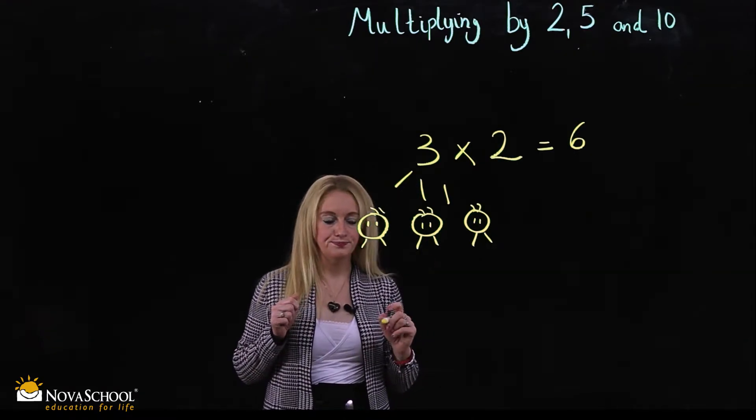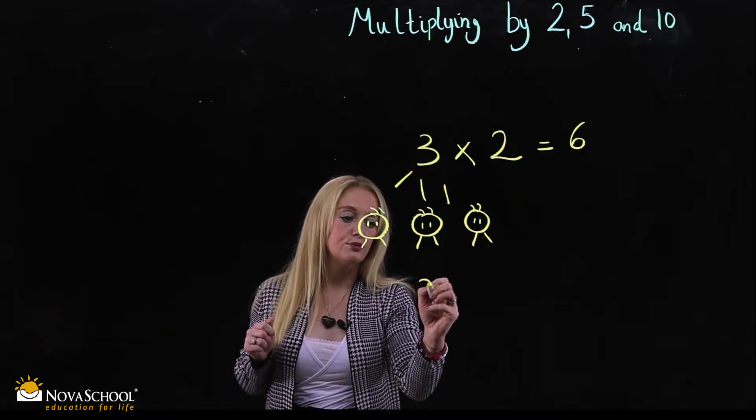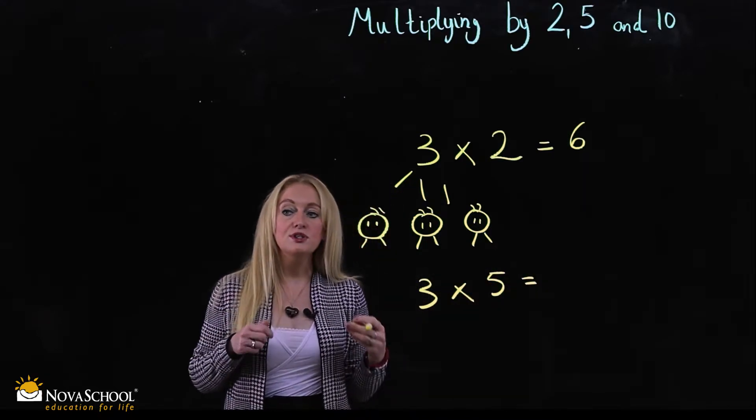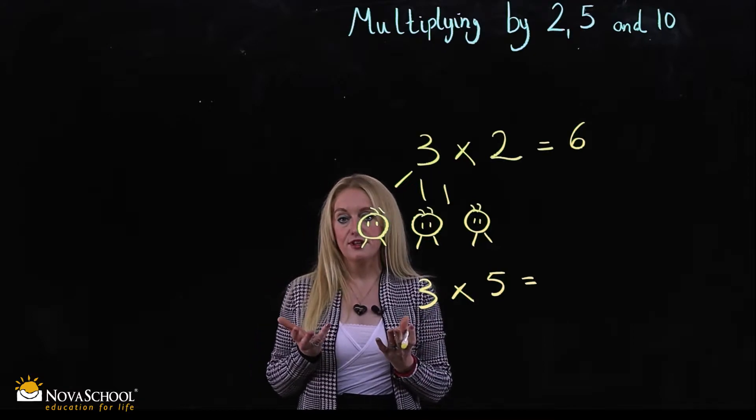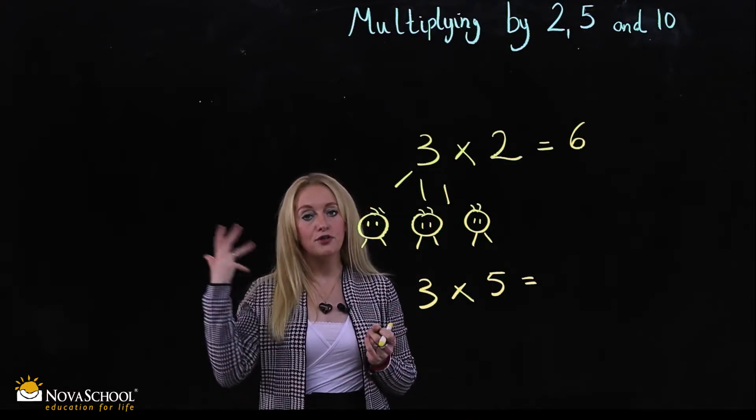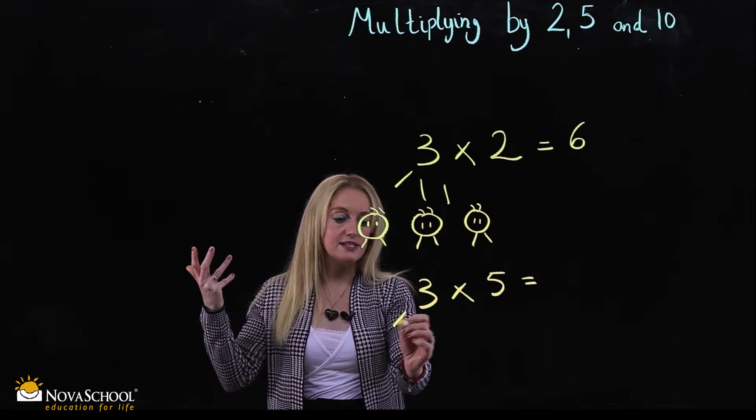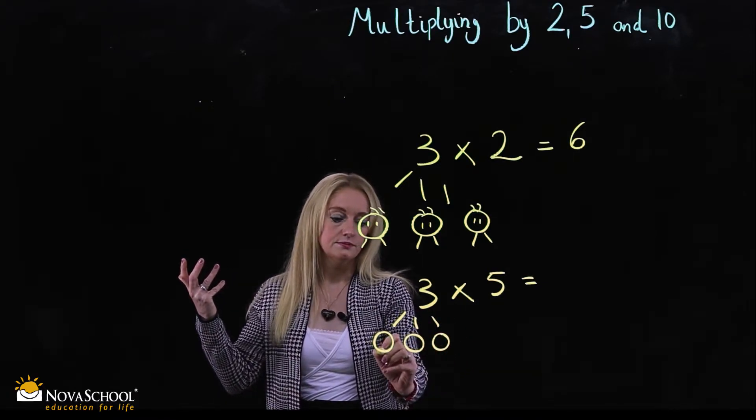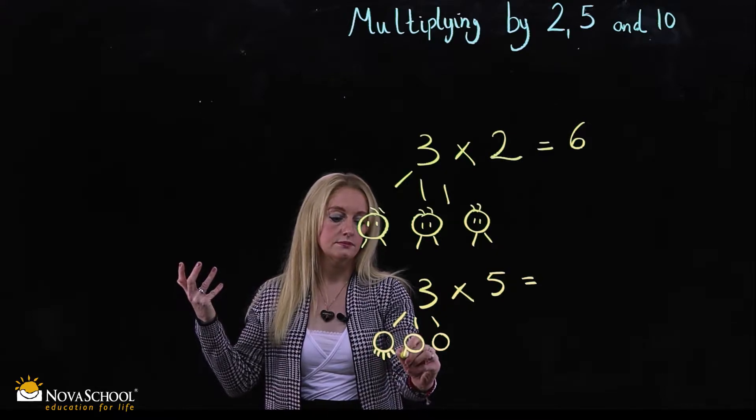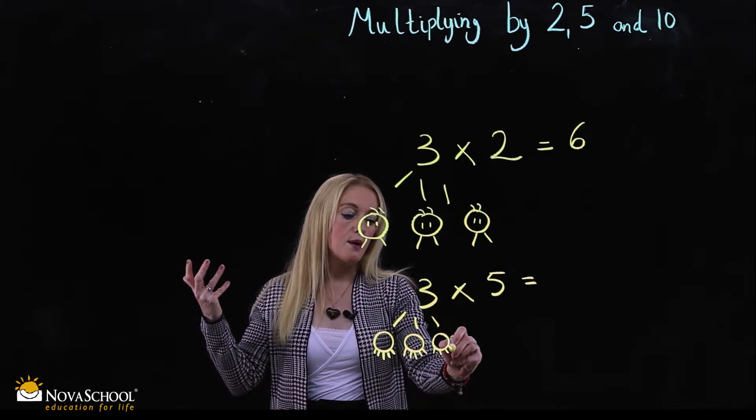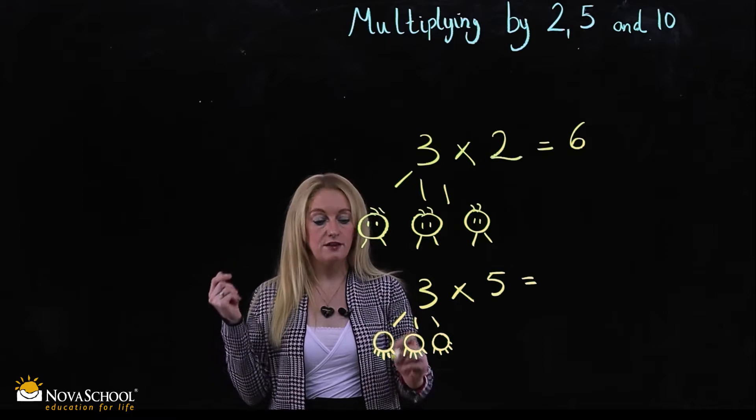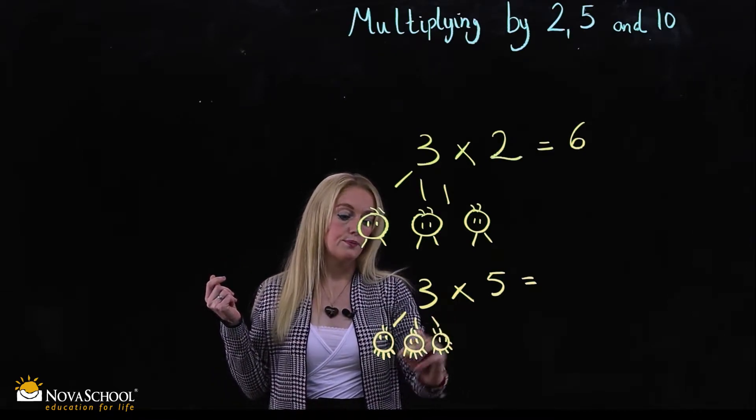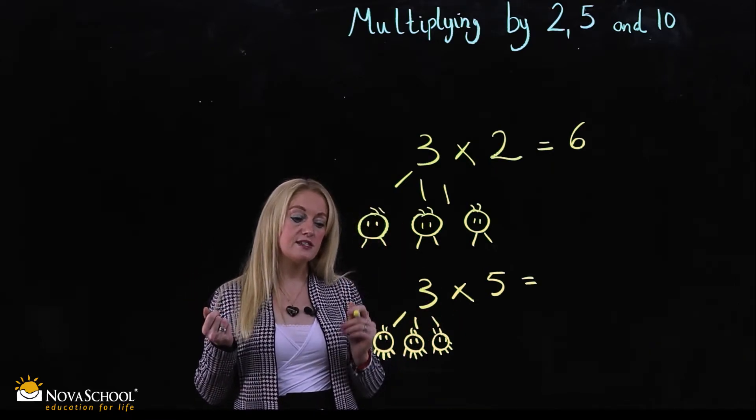The next question. We have 3 times 5. Again, we're going to use the same method. We're going to have our three monsters. Our monsters now have five legs. So what do we do now? We look at the monsters. We have three of them. They have five legs.